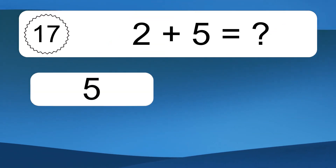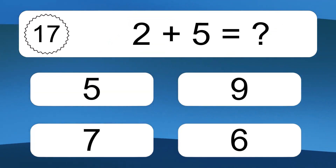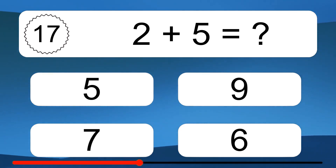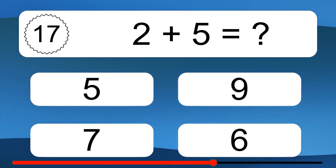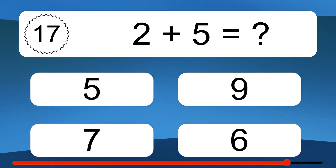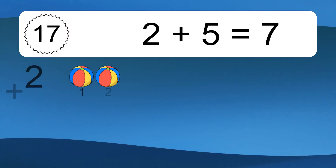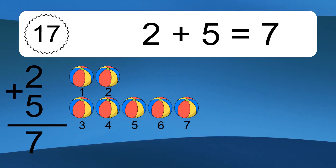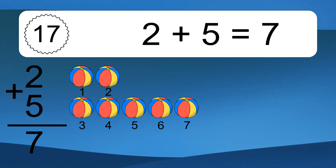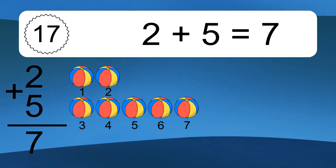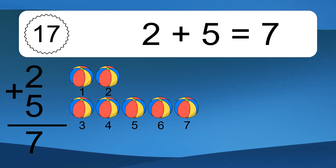2 plus 5 equals what? 2 plus 5 equals 7. Let's count it. 1, 2, 3, 4, 5, 6, 7.